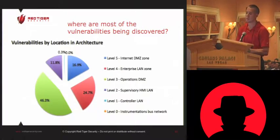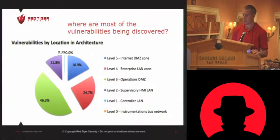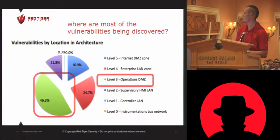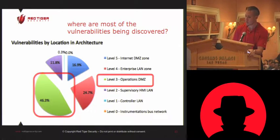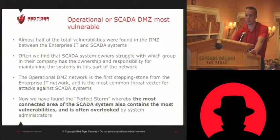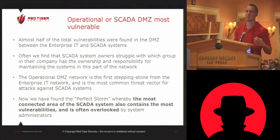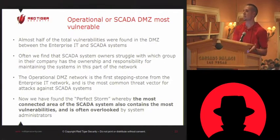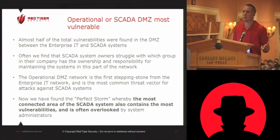The next thing we wanted to find out was where vulnerabilities were most discovered in the model. What we found was the largest number of vulnerabilities were detected at the DMZ layer between the corporate IT system and the SCADA systems. About almost half of the vulnerabilities we found were in that middle layer, and what we find is that middle DMZ layer is kind of like no-man's land.